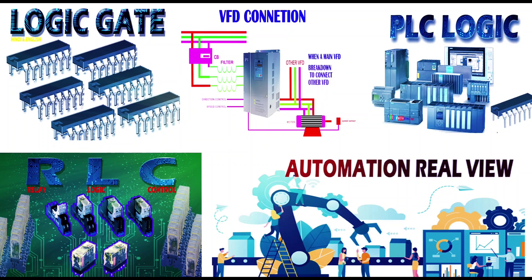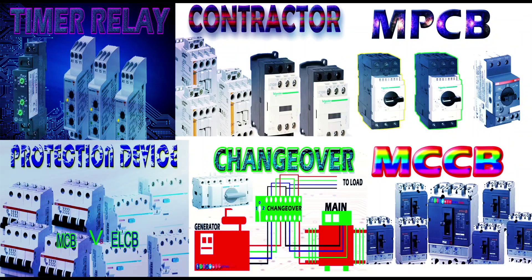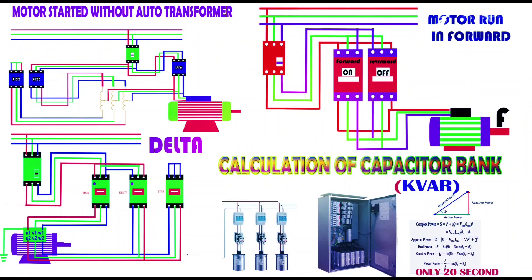Learn about Electrical Protection and Control Devices: MCCB, RCCB, LBC, PMCB. Learn about Electrical Control Connections: Star Delta Connection, Forward and Reverse Direction Control, Auto Transformer Control, and Stator control.